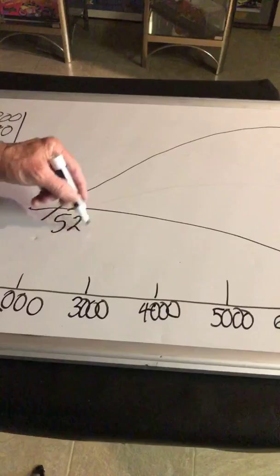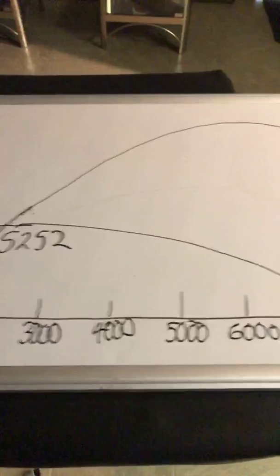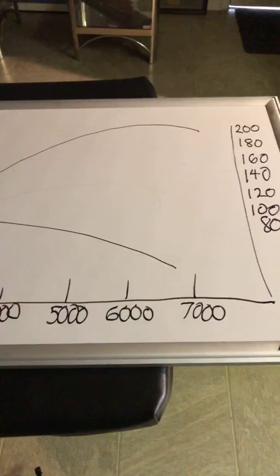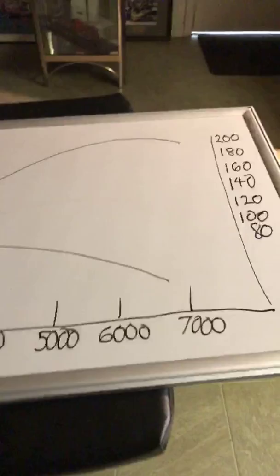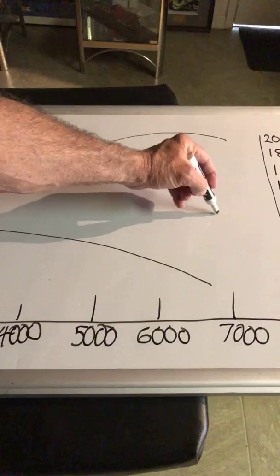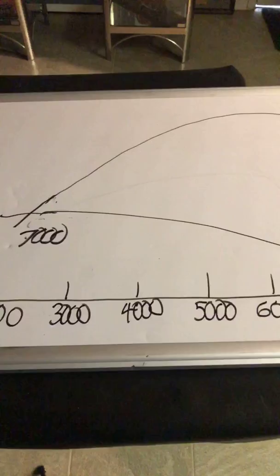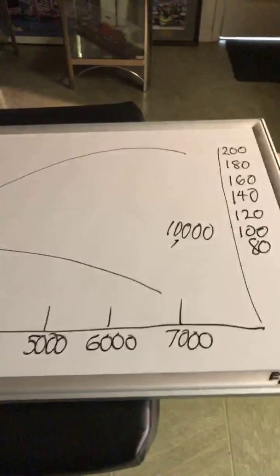That's what a pro-stock engine looks like. It has way more horsepower than it has torque. The pro-stock car guys that go 6.50s and 6.40s at 210, 215 miles an hour now — most of them don't even know what their peak torque is, because the peak torque is so far below their RPM range. This engine right here might make peak power at 10,000 RPM, and it might make peak torque over here at 7,000 RPM.